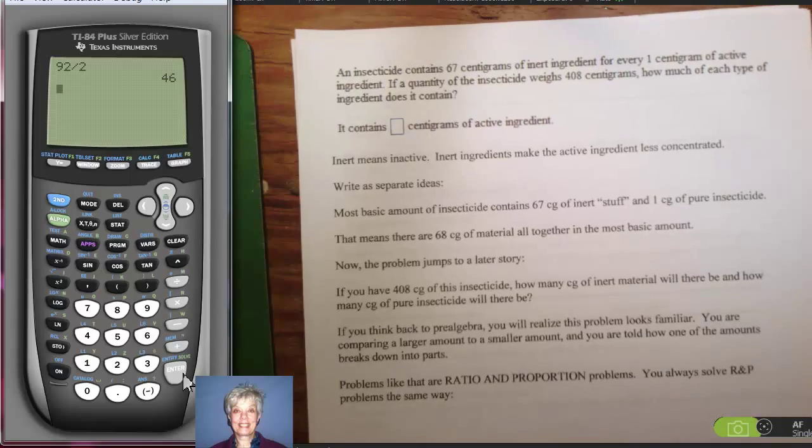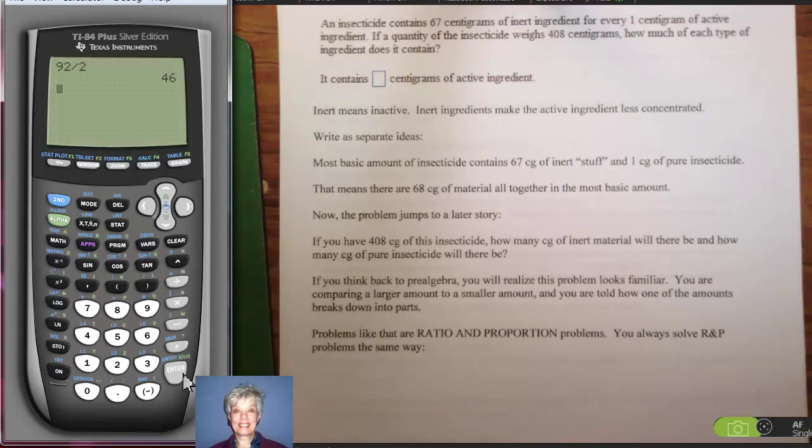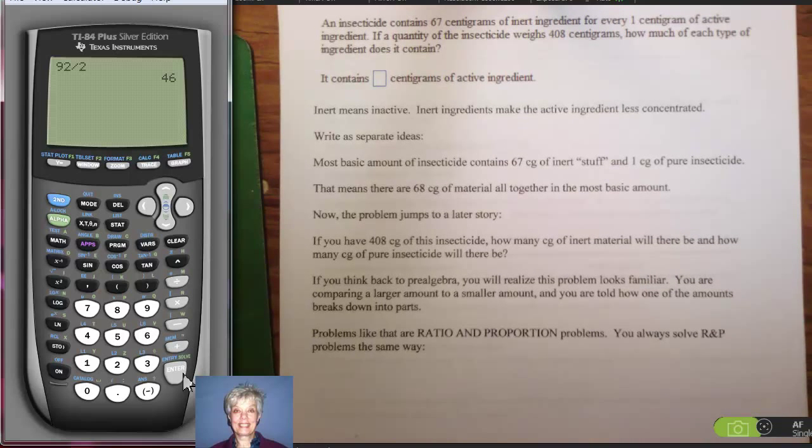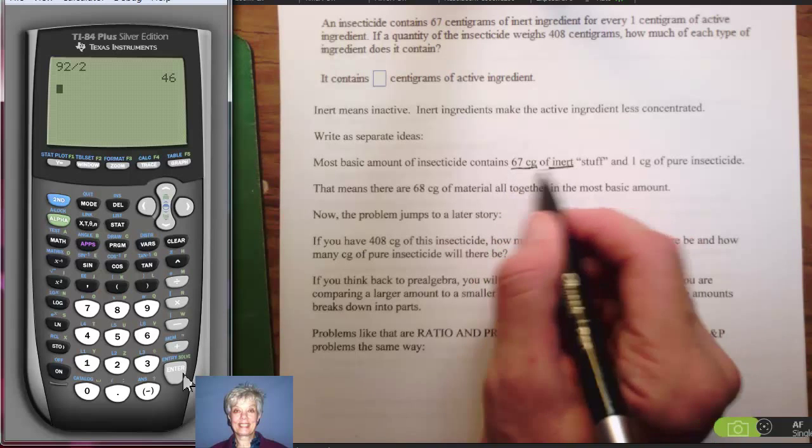Okay, here's a different kind of story problem. It's a problem that you saw in pre-algebra, so you may not even remember it. We're going to go over it again. An insecticide contains 67 centigrams of inert ingredient. Inert means it doesn't do anything. It's just there to take up space. So insecticide contains 67 centigrams of inert ingredients for every 1 centigram of active ingredient. That is the stuff that actually kills the insects.